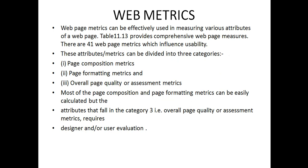The last point is web metrics, which can be effectively used in measuring the various attributes of a web page. There are a total of 41 web page matrices which influence usability. These attribute matrices can be divided into two parts: page composition matrices and page formatting matrices, and overall page quality or assessment matrices. Most of the page composition and page formatting matrices can be easily calculated, but attributes in the overall page quality category require design and user evaluation.